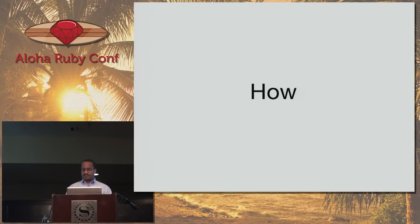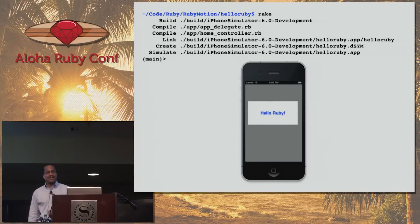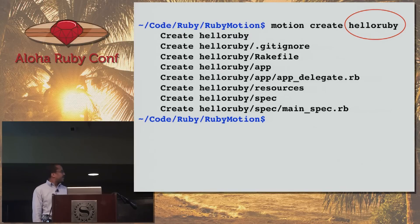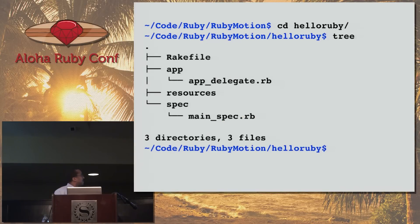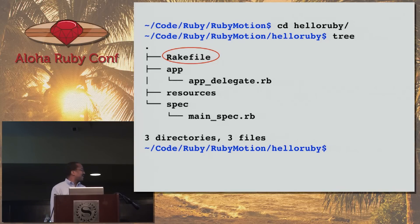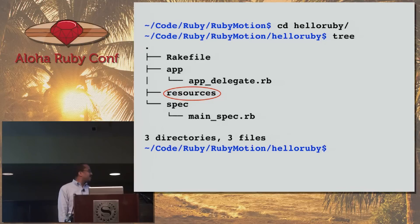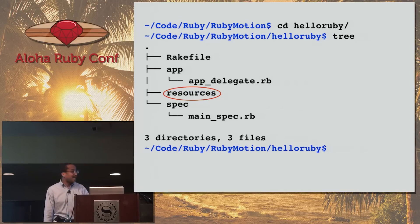So that's how. Our rake file is where we specify things like what our icon name is going to be and what the name of the app is going to be. Resources is a directory where you drop in your images or WAV files if you have audio, and it's also where you would drop in your Interface Builder files. For those coming to RubyMotion from Objective-C — yes, you can use Interface Builder with RubyMotion, and I'll show you that later in this presentation.